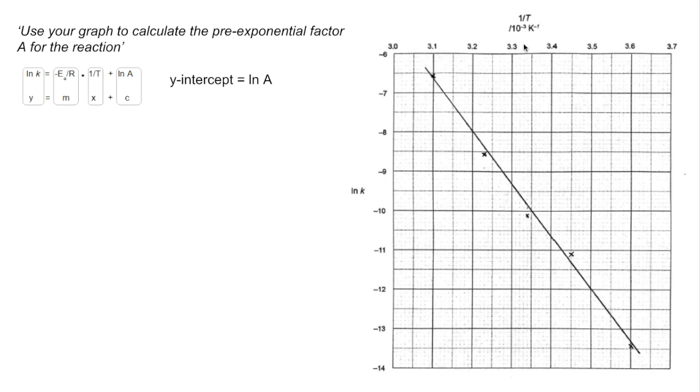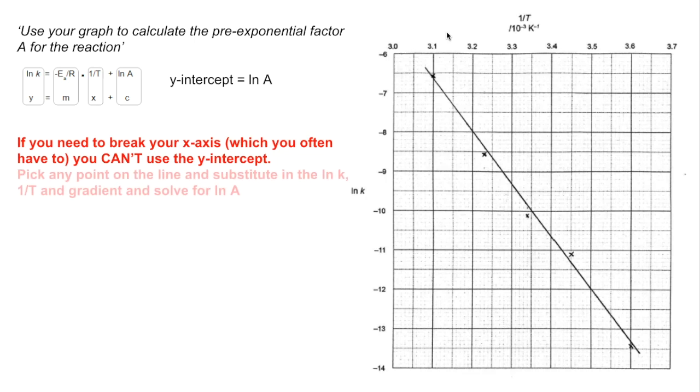These axes were set by the exam question, so you can see they've started at 3 times 10 to the minus 3. So we can't get a y-intercept from this. So when that's the case, we need to pick any point on the line and substitute in the ln K value, so that's going to be the y value, the 1 over T, so that's going to be the x value, and the gradient that we've already calculated, and then just solve for ln A. So we'll do that now.